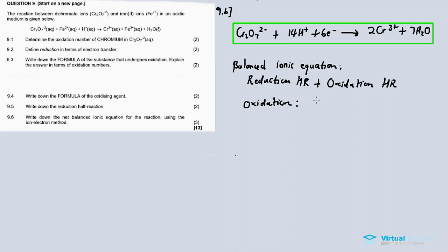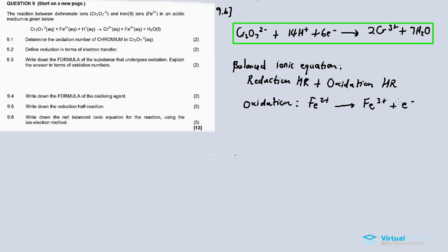For the oxidation half reaction: Fe²⁺ on the left changes to Fe³⁺ on the right. The oxidation number increases from 2 to 3, so one electron is lost per iron atom. However, the reduction half reaction involves 6 electrons gained. Since oxidation loses only 1 electron but reduction gains 6, we must multiply the oxidation half reaction by 6 so that the electrons lost equal the electrons gained.